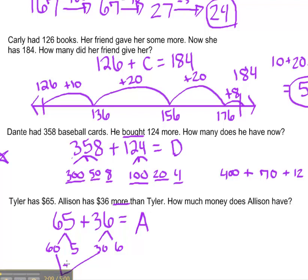So that's 60 plus 30 is 90. 5 plus 6 is 11. And 90 plus 11 is 101. So Allison has 101 dollars.